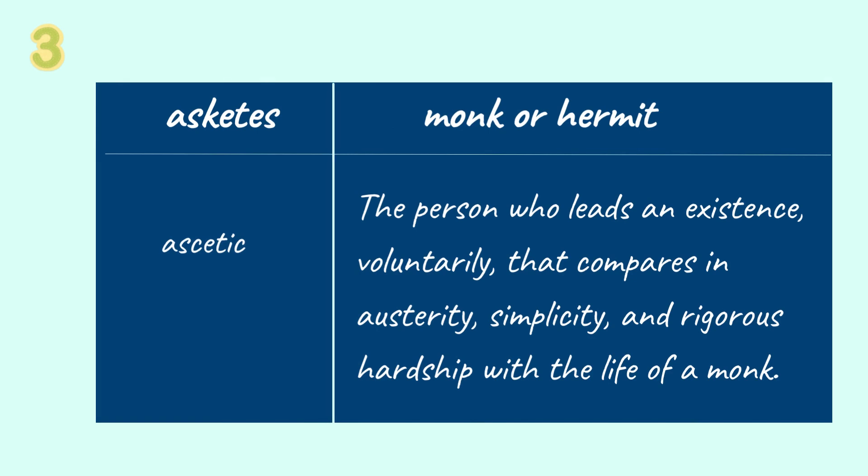The third root word is Ascetis, meaning monk or hermit. There is one word related to Ascetis: Ascetic — a person who leads an existence voluntarily that compares in austerity, simplicity, and rigorous hardship with the life of a monk.